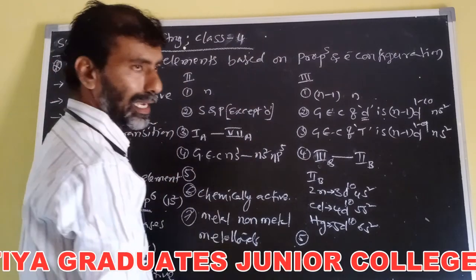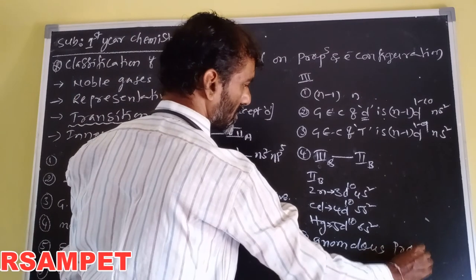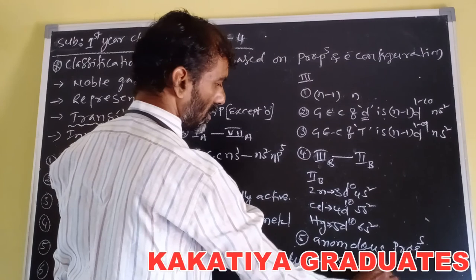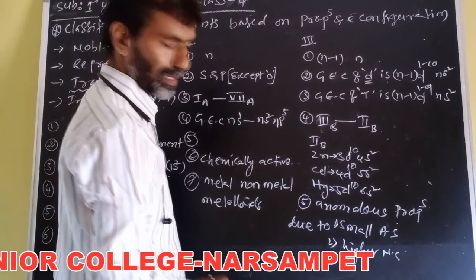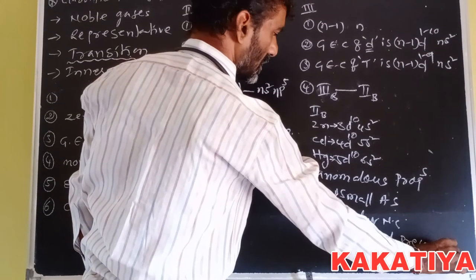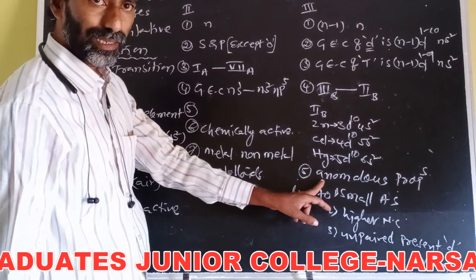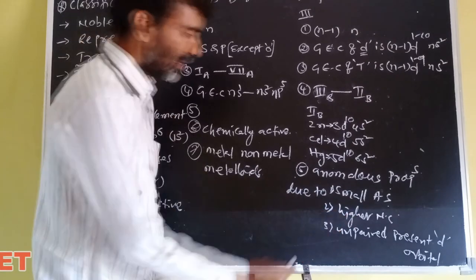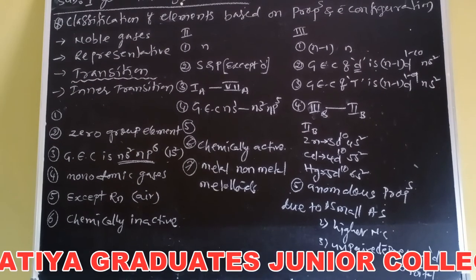Transition elements show anomalous or typical characteristics due to small atomic size, higher nuclear charge, and the presence of unpaired electrons in their d-orbitals.